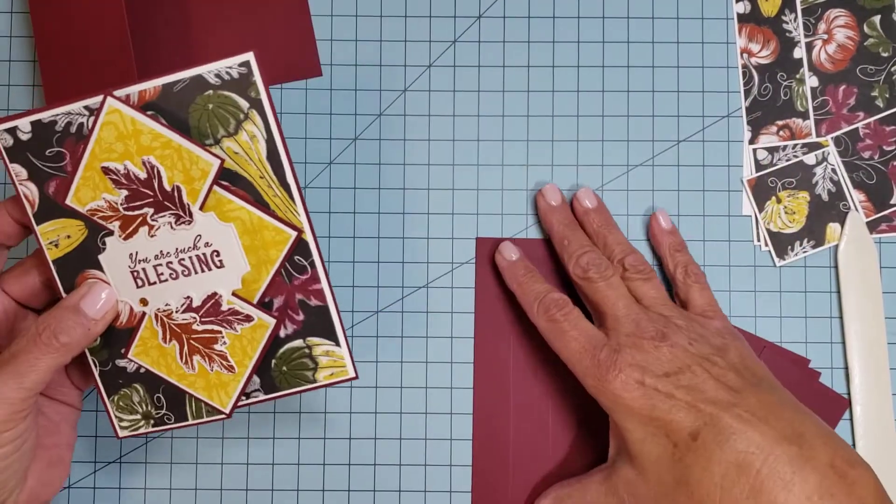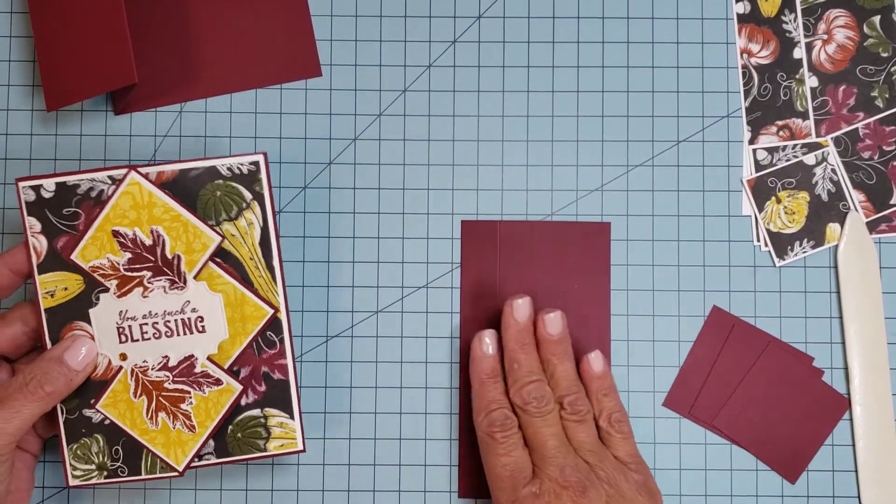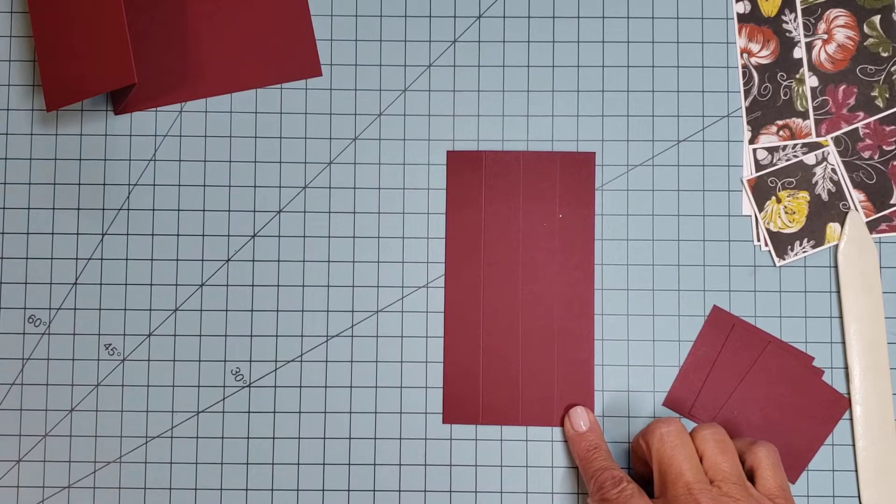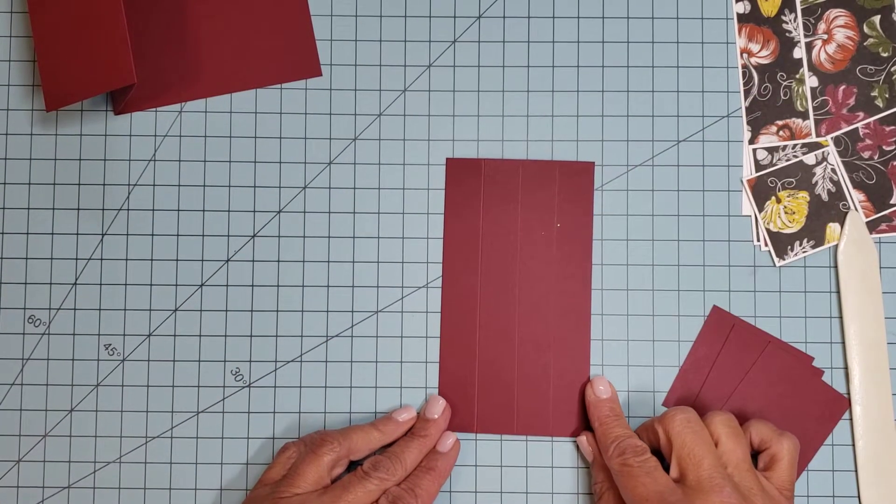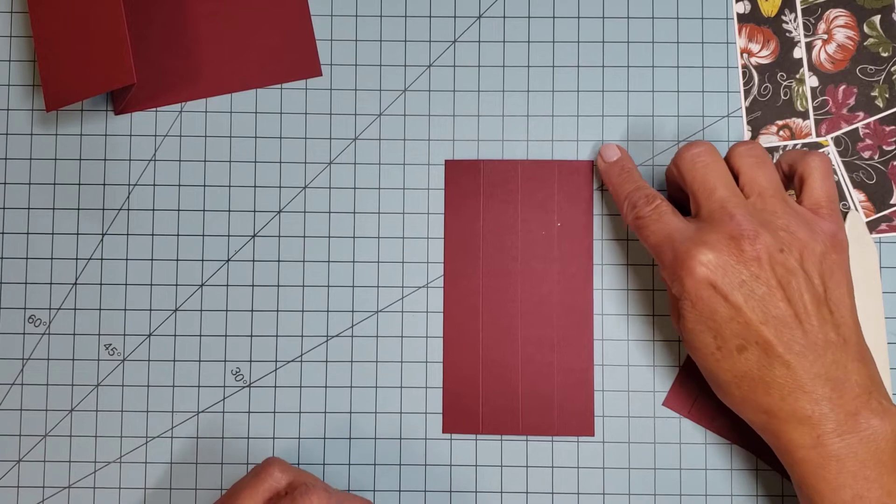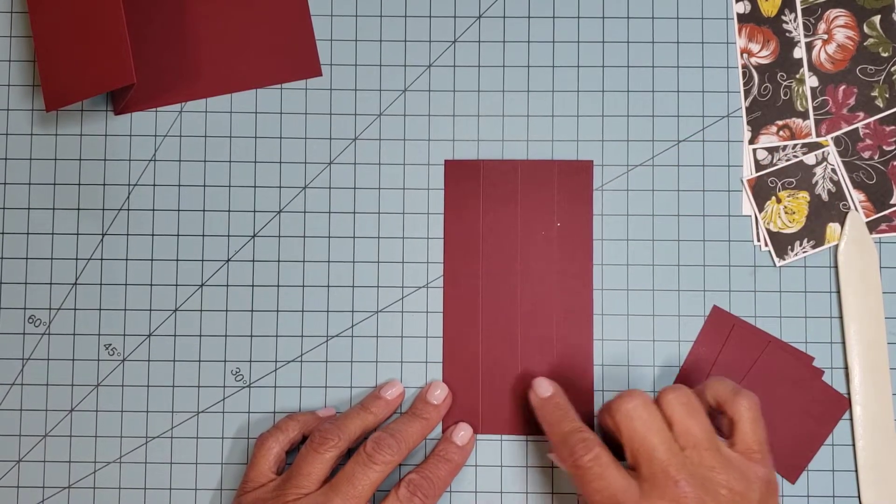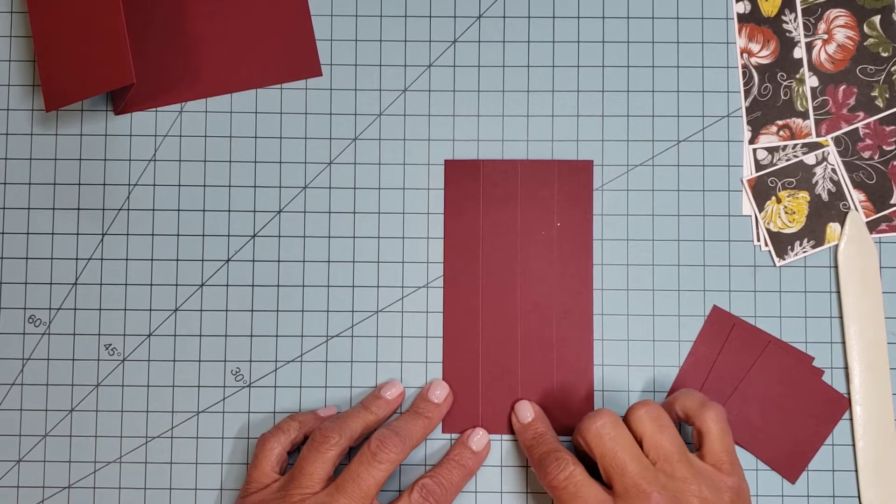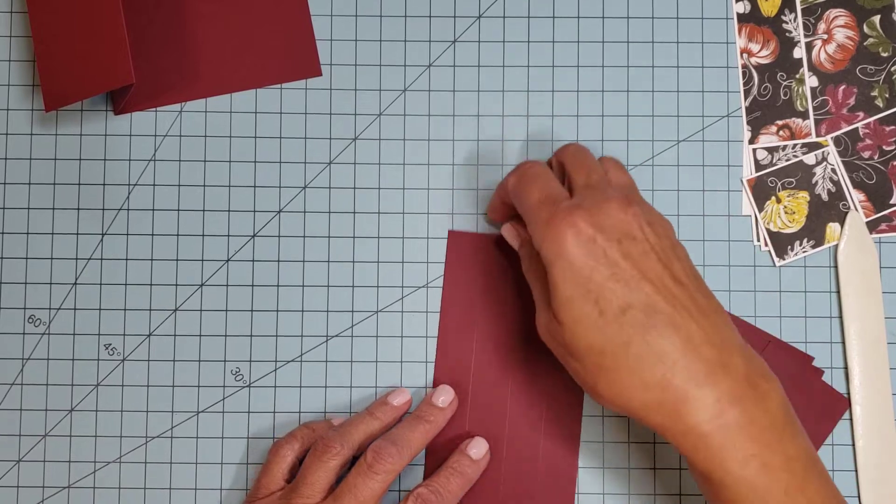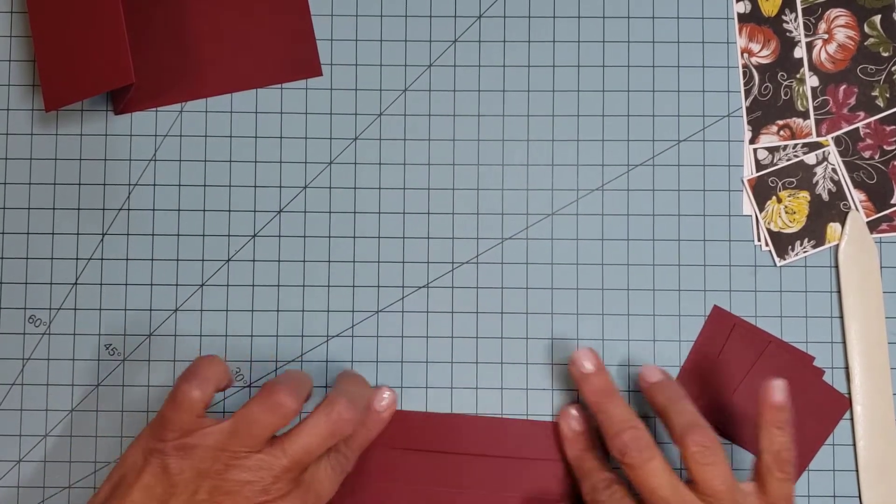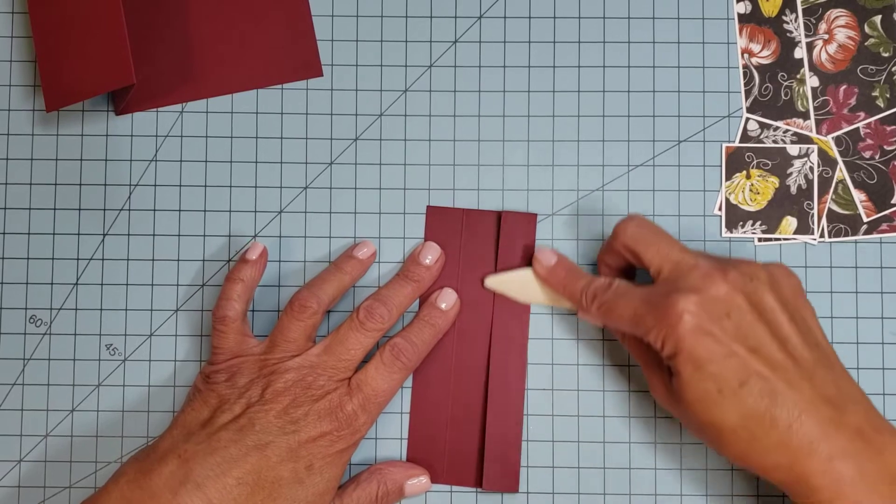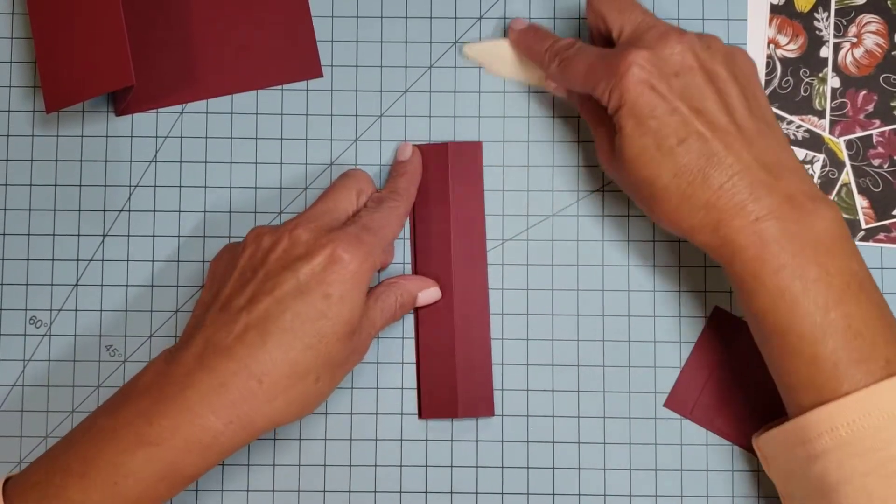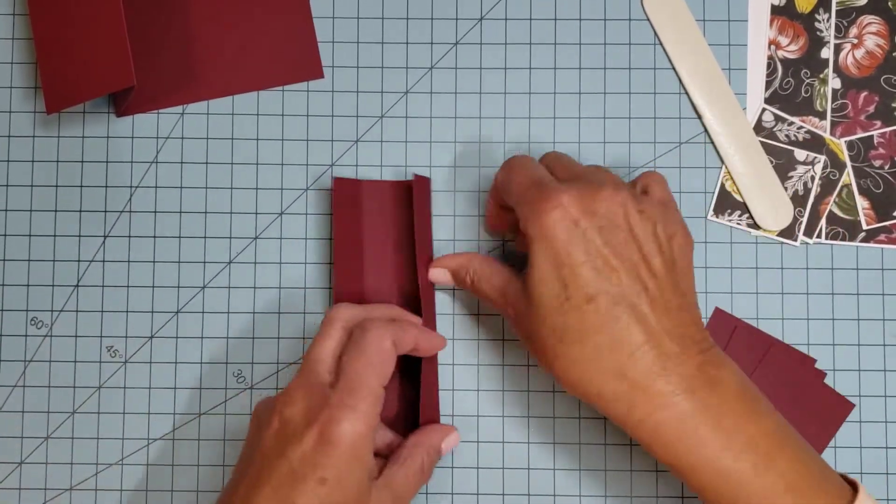The pop-up mechanism is 3 inches wide by 5.5 inches long, same length as the standard card front. I scored at 3/4 inch increments - at 3/4 inch, 1.5 inches, 2.25 inches. It is folded and burnished, and you're going to actually create a square panel with this, which is going to be the pop-up mechanism.